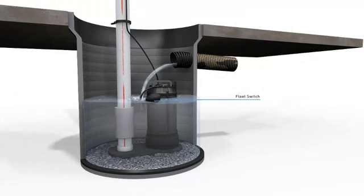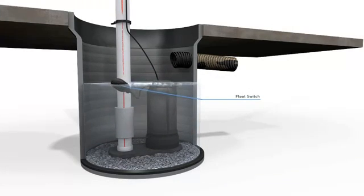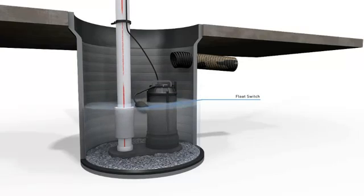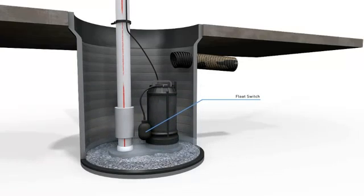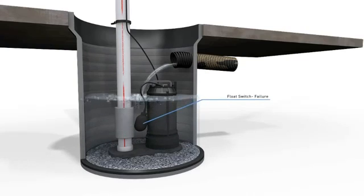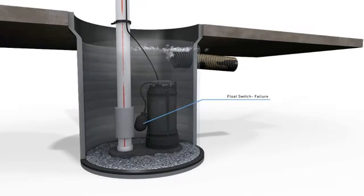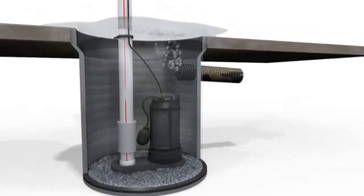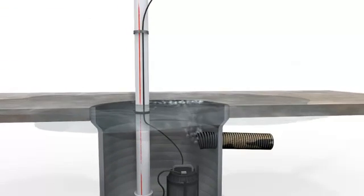Mechanical float switches activate the sump pump when they change position, typically by water filling the sump pump pit. They are prone to problems because they can become fouled and can fail to actuate your sump pump when you need it most. One in ten homes in the United States with basements reported some form of water seepage into their homes.